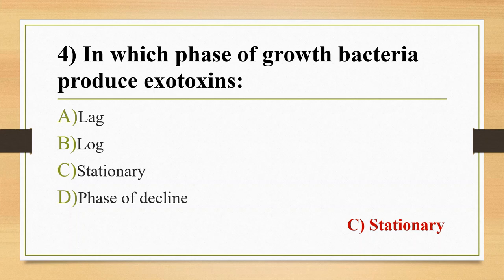In the Lag phase, the size of bacteria is maximum. In the Log phase, staining properties are better. In the Stationary phase, bacteria produce spores, exotoxins, and granules. In the Decline phase, involution forms are seen, such as L-forms. So the answer is Stationary phase.